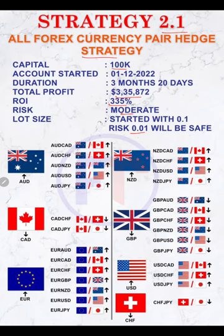All 29 pairs are connected here, which will help you understand how it will hedge. By looking at the trading account statement you'll also see how it is working. For example, if the Australian dollar (AUD) is strong, then all currency pairs connected with AUD — such as AUD/CAD, AUD/CHF, AUD/NZD, AUD/USD, and AUD/JPY — will be on the buy side.